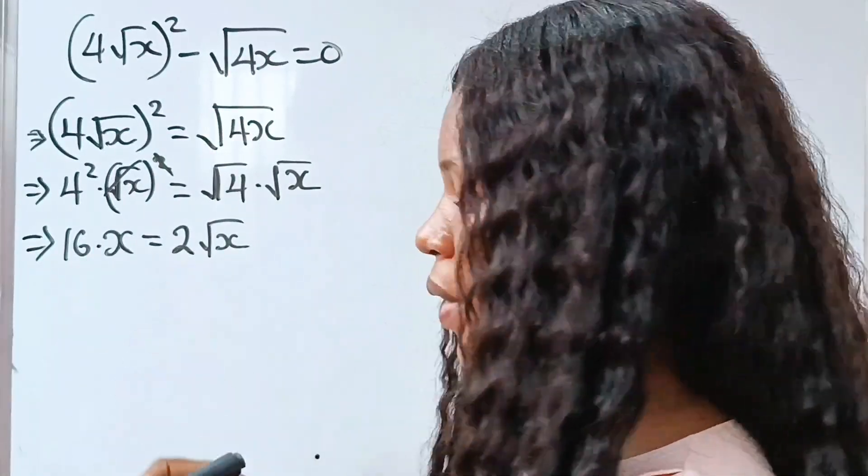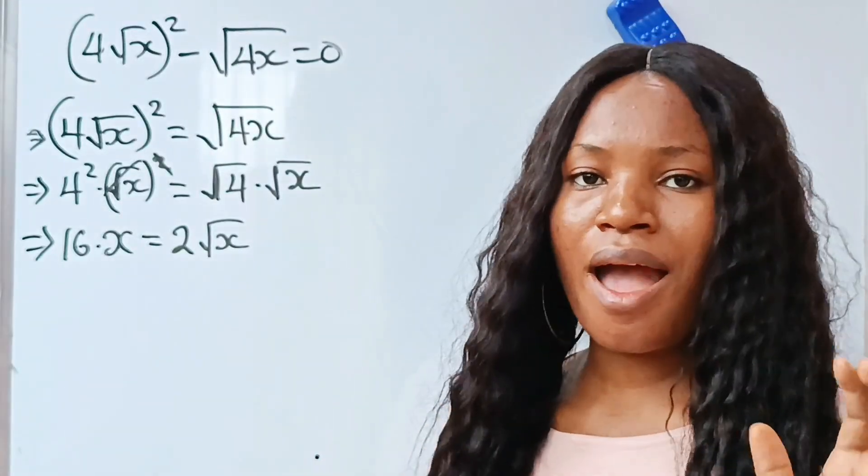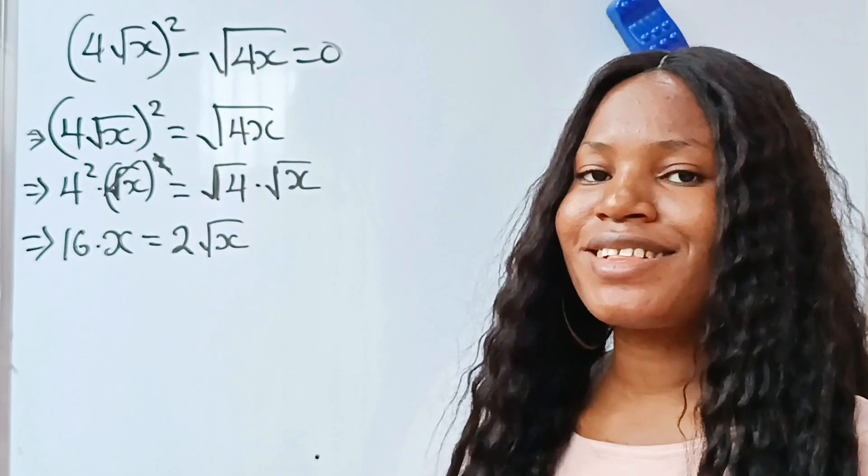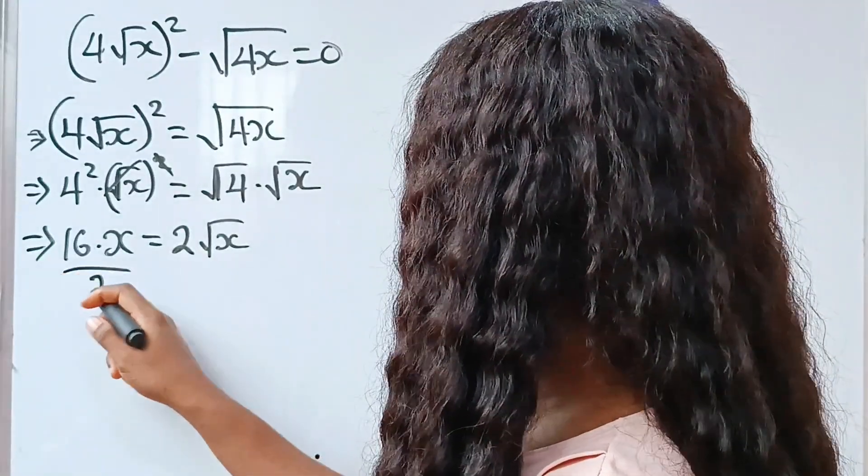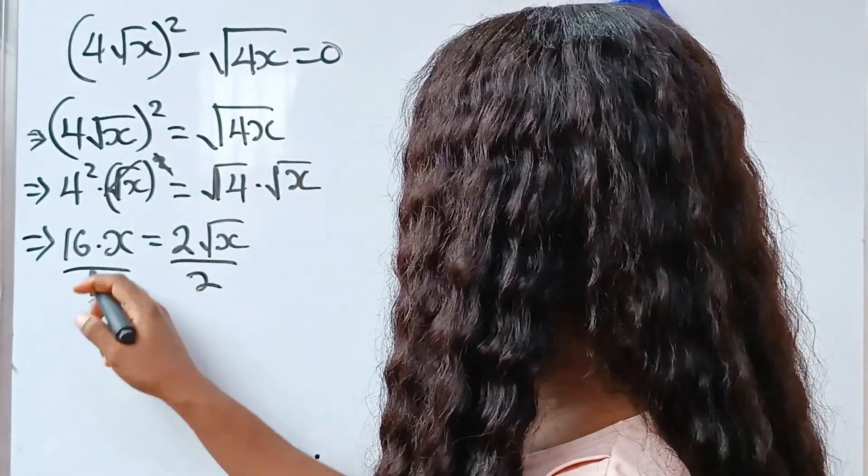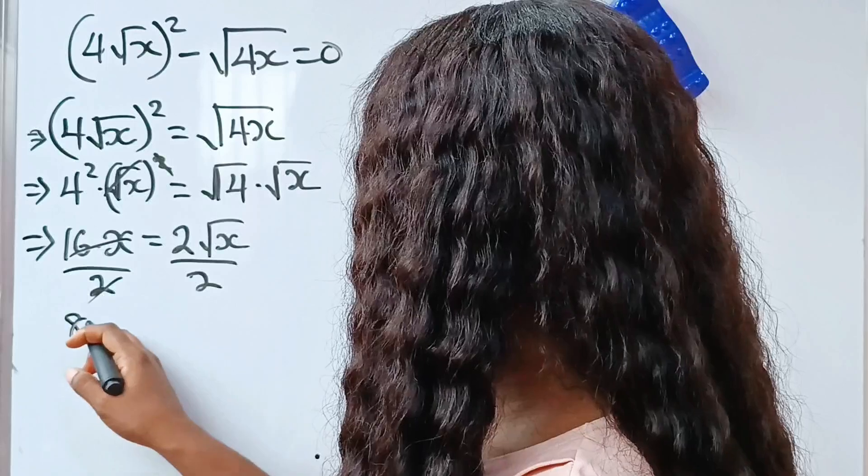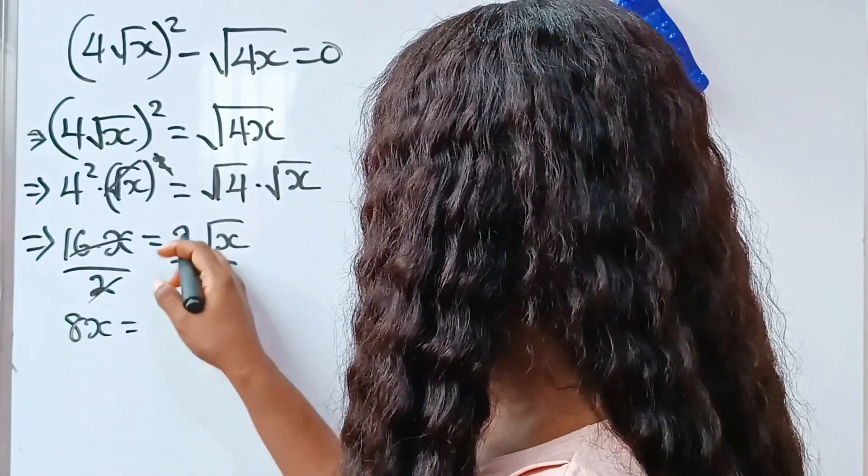Since we have 16 and we have 2 here and both of them are divisible by 2, let's go ahead and divide. So divided by 2, divided by 2, so what we will have is 8x is equal to root x.